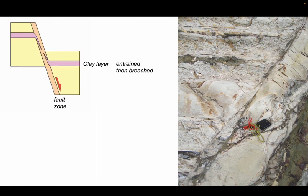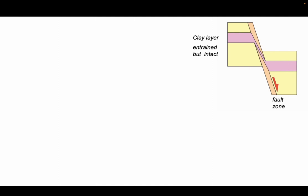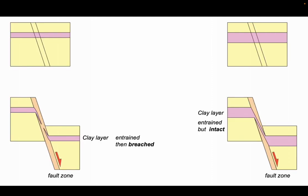Let's move back to our hypothetical cartoons and go to another one where we have a thicker clay layer. As we fault this one down, the clay or shale has a greater chance of remaining continuous as the shearing and faulting continues. The clay layer is entrained but remains intact. So let's compare our two situations - the throw, the displacement in our fault zones was the same, but the thinner clay layer was breached whereas the thicker clay layer thinned out but remained intact.